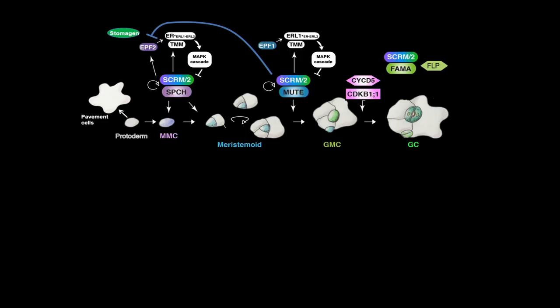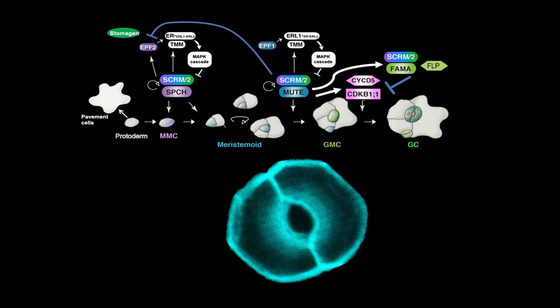So today's talk focused on how stomata make a pore surrounded by paired guard cells, regulated by the master regulator MUTE, which directly turns on both cell cycle genes and inhibitors of those cell cycle genes. This incoherent feed-forward loop is critical for ensuring cell division happens just once to make functional stomata.